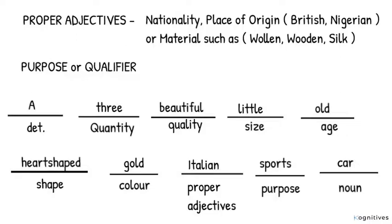So this is represented: A three beautiful little old heart-shaped gold Italian sports car. In this example, you cannot place old before little. It will be wrong. Neither can you place little before beautiful. It will also be wrong. So you have to place each of these adjectives in the right order for it to be correct.